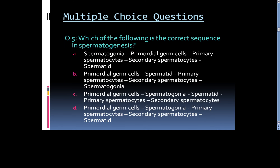Question 5: Which of the following is the correct sequence in spermatogenesis? A. Spermatogonia, primordial germ cells, primary spermatozoa, secondary spermatozoa, spermatids. B. Primordial germ cells, spermatid, primary spermatozoa, secondary spermatozoa, spermatogonia. C. Primordial germ cells, spermatid, primary spermatozoa, secondary spermatozoa. D. Primordial germ cells, spermatogonia, primary spermatozoa, secondary spermatozoa, spermatids.